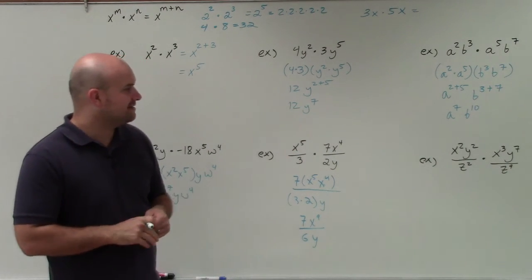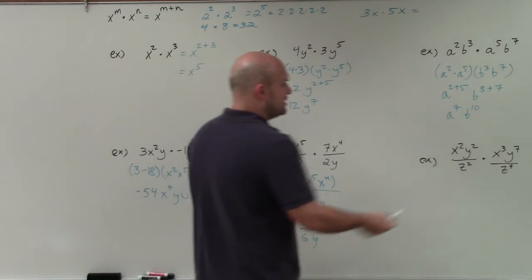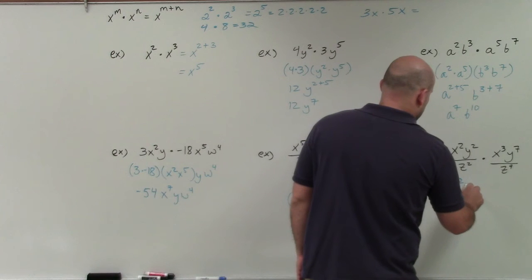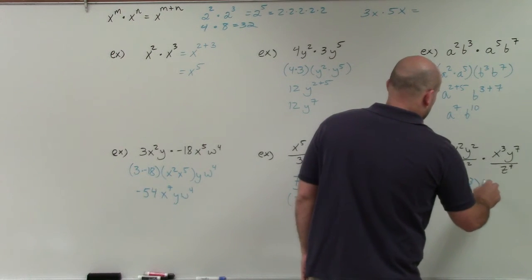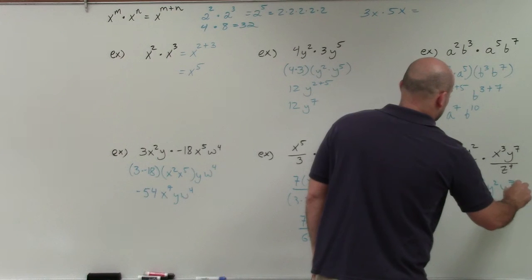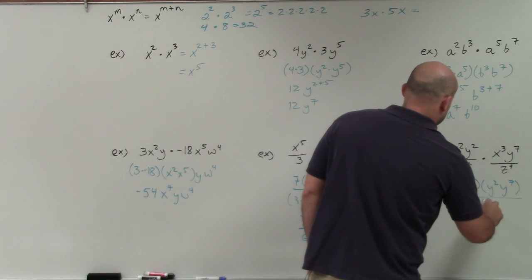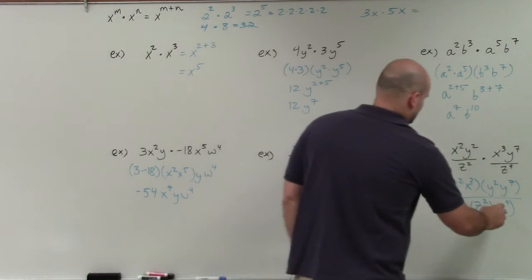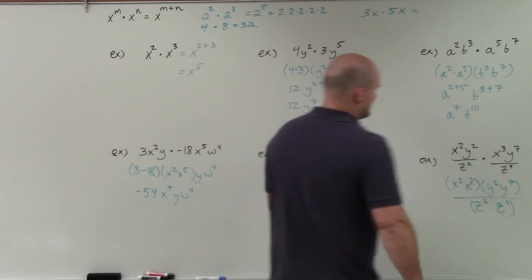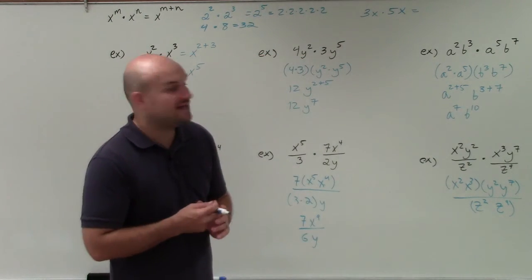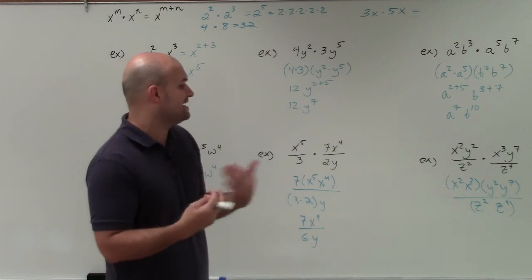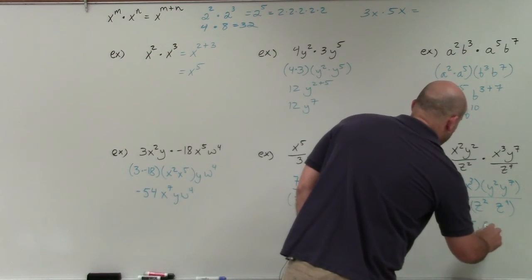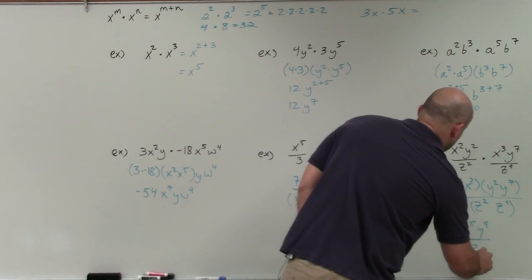Over here, again, I'm just going to multiply the numerators and multiply the denominators. I have x's and y's, so I'm going to group them: x squared times x cubed, y squared times y to the seventh, all over z squared times z to the ninth. Now I just add the powers for the x's, add the powers for the y's, and add the powers for the z's. So I obtain x to the fifth, y to the ninth, and z to the eleventh.